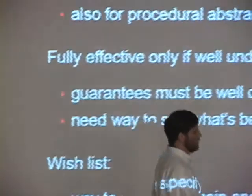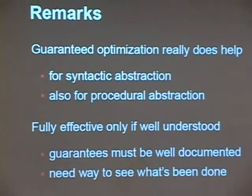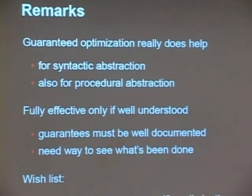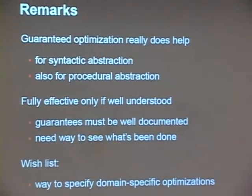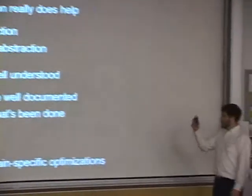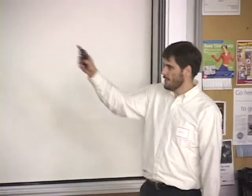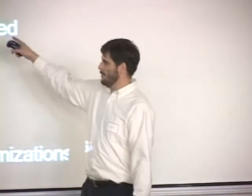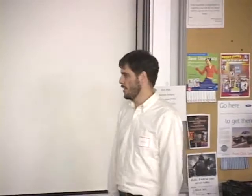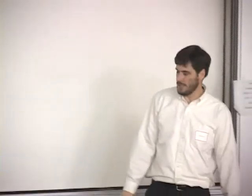Some final remarks. Guaranteed optimization really does help — so far it really does help me and Oscar and those who are in the know. Other people have to puzzle about what's happening. It works both for syntactic abstraction and for procedural abstraction; the same things apply, but the effect is even greater for syntactic. And of course we need to do a better job of documenting this and formalizing it. Several years ago people tried to formalize proper treatment of tail recursion and failed. The wish list is a way to specify domain-specific optimizations — that's sort of the next step.